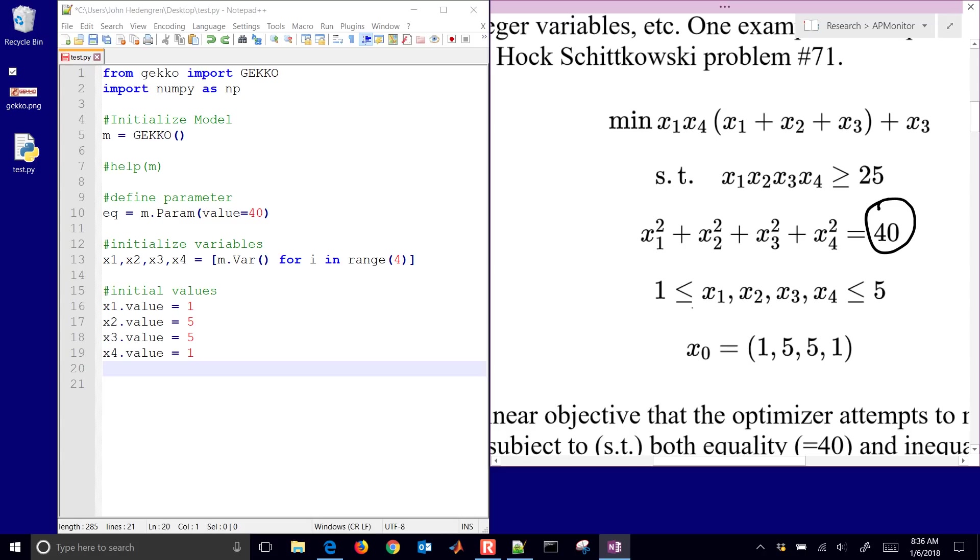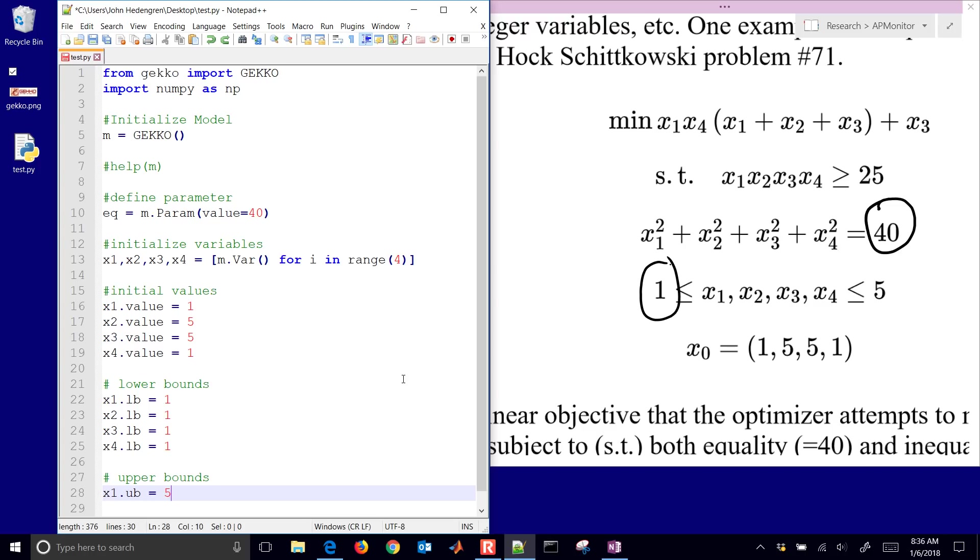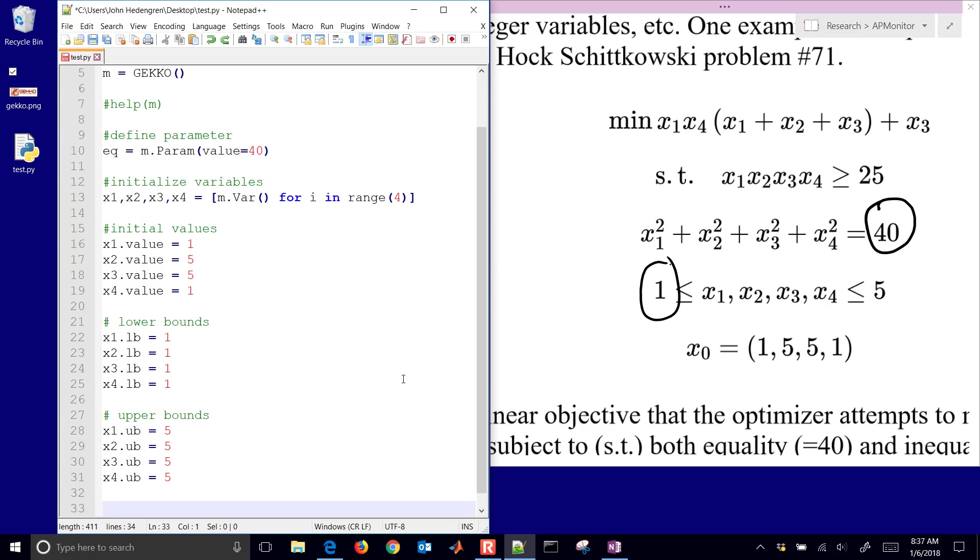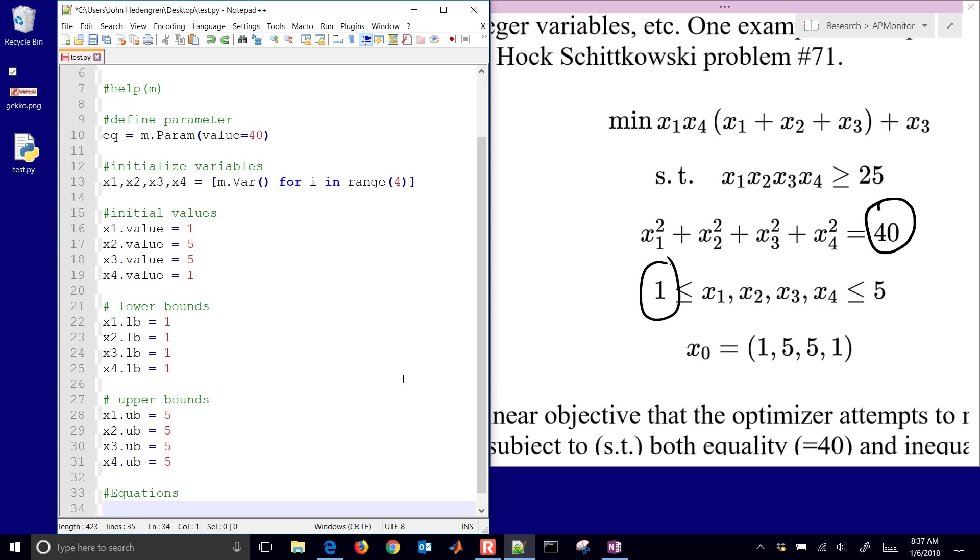Next thing that I need to do is go ahead and define the lower bounds. For all of them, they have a lower bound of 1. I'll define those. This is the lower bound that you see right here. Now, also upper bounds. Those are just going to be equal to 5.